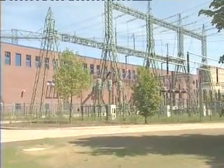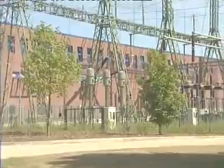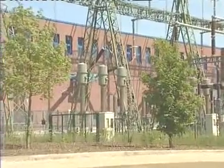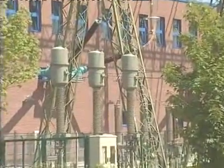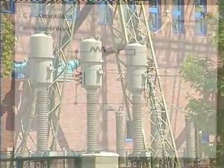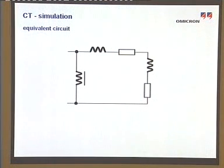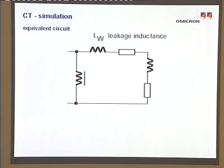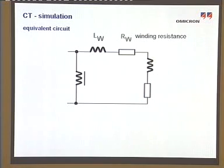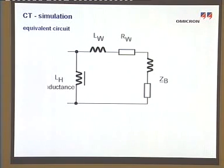In order to form a basis for further discussions, we will first consider the conventional CT in more detail. For the mathematical description of CTs with iron core, the model shown here is normally used. It consists of the leakage inductance, the winding resistance, the connected burden and the CT inductance.